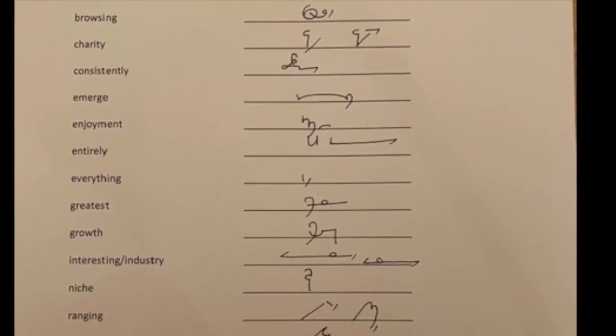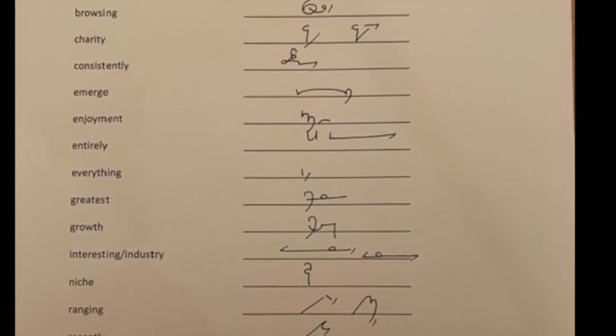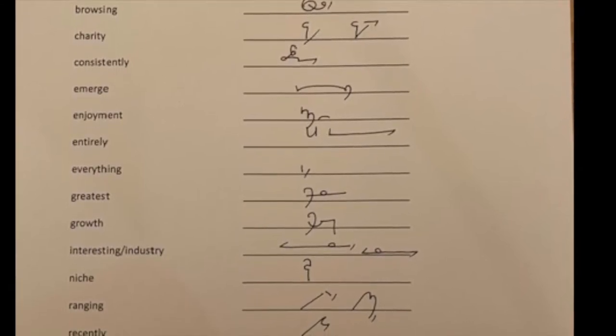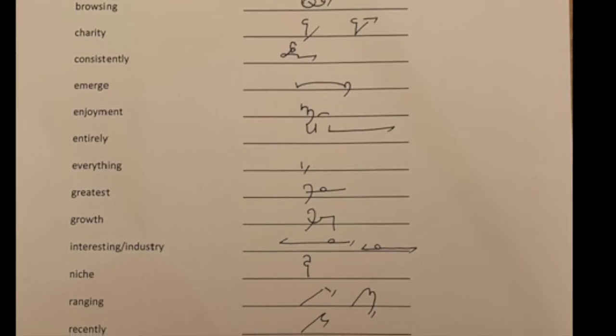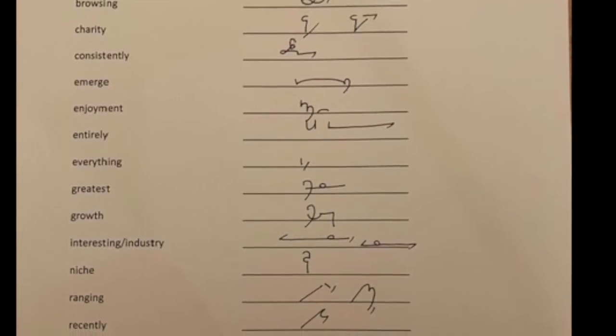Greatest, with the GR blend where GR comes together, the next consonant goes inside, in this case the T, and then add a final ST to make GREATEST.